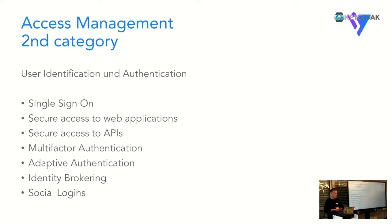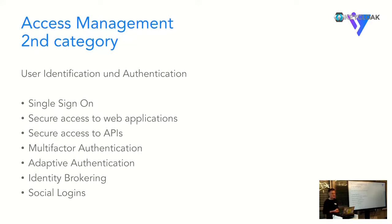Then we have adaptive authentication, which is an assessment of an authentication request - usually a risk score calculation based on IP address or geolocation. If a user logged on this morning from Germany and then attempts an impossible travel and logs on from Tokyo, adaptive authentication can deny the request or ask the user to re-authenticate with a second factor. There's also identity brokering - I don't need to say much on that - and social logins, which are quite useful in certain use cases.